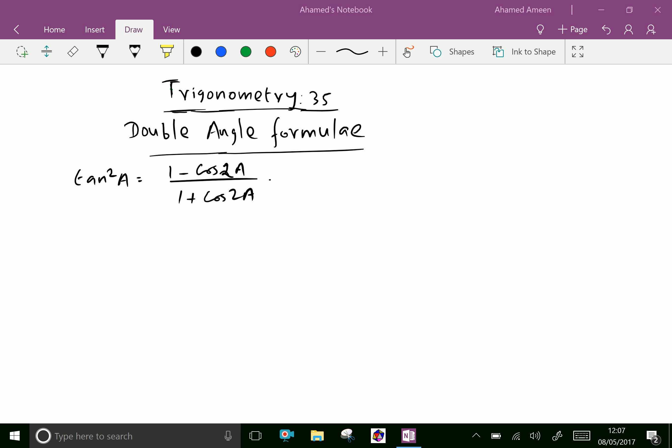Welcome to amineacademy.com. Now we can prove tan squared A equals 1 minus cos 2A over 1 plus cos 2A.